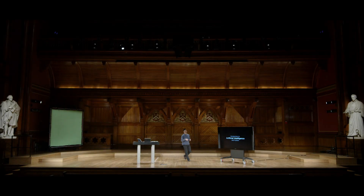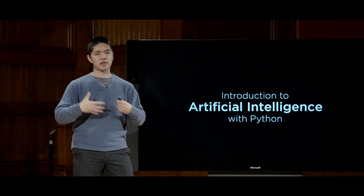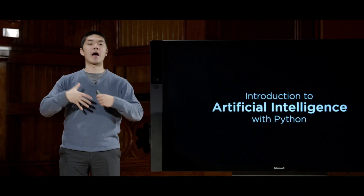Welcome back, everyone, to an introduction to artificial intelligence with Python. Last time we took a look at how AI inside our computers can represent knowledge. We represented that knowledge in the form of logical sentences in a variety of different logical languages. The idea was we wanted our AI to represent knowledge and use those pieces of information to derive new pieces of information via inference — to take some information and deduce additional conclusions based on what it already knew for sure.